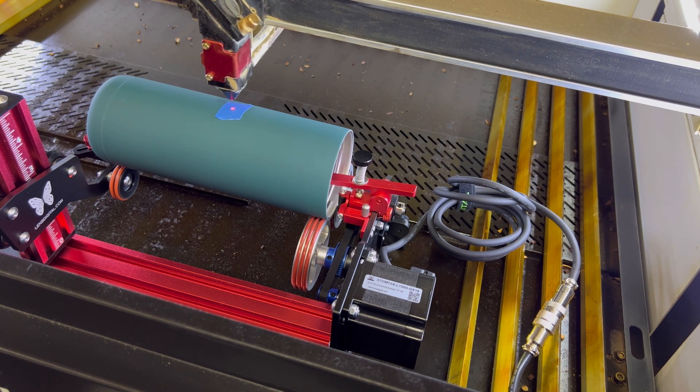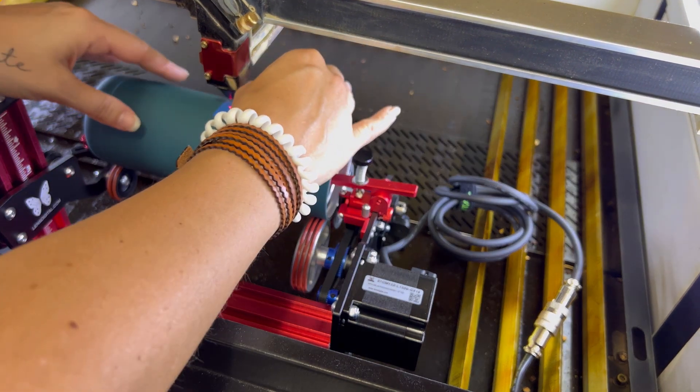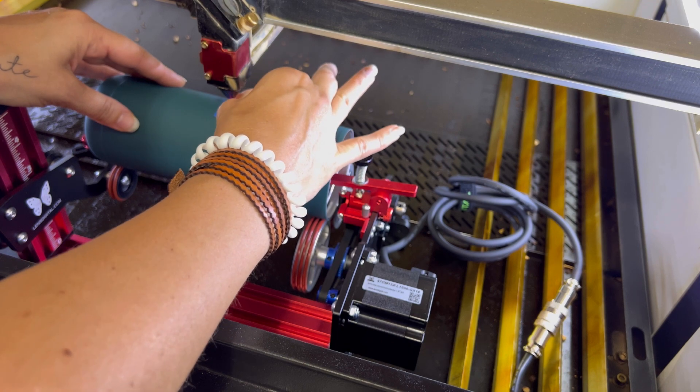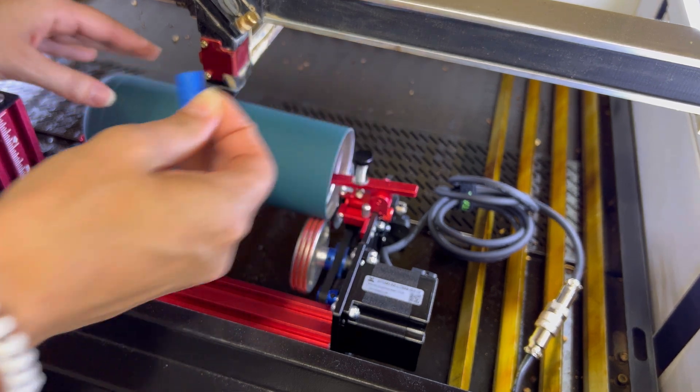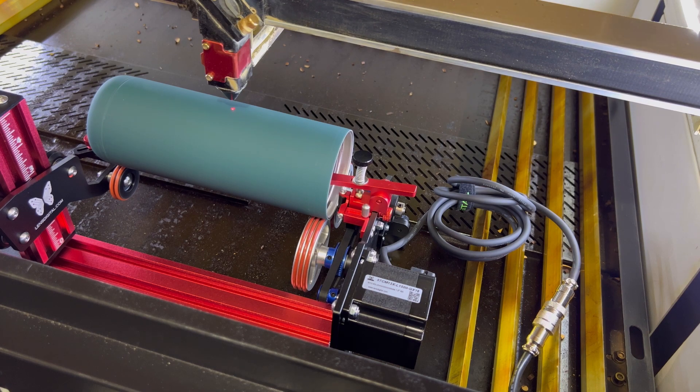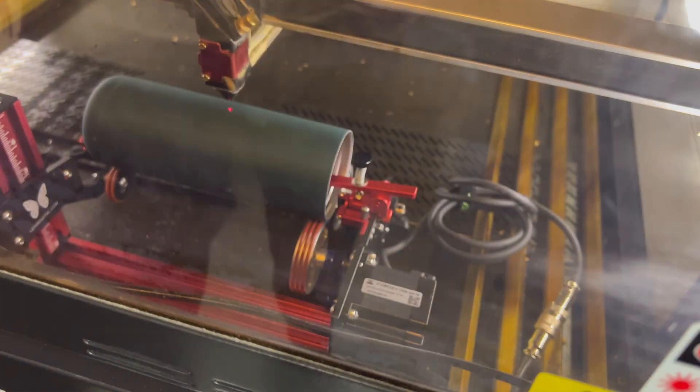It should line right back up with the beginning and now you can carefully remove the tape before you engrave. Go ahead and lower your lid and press Start.